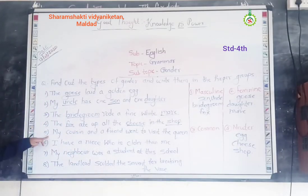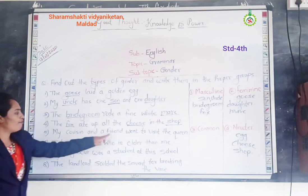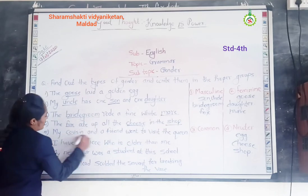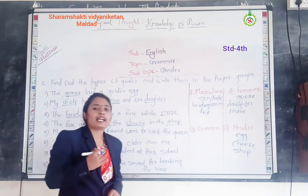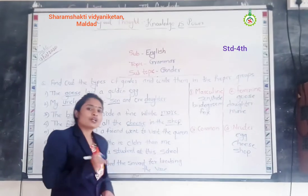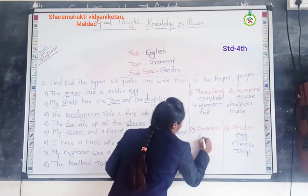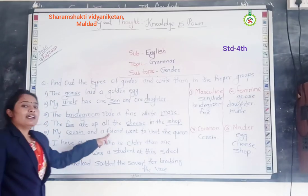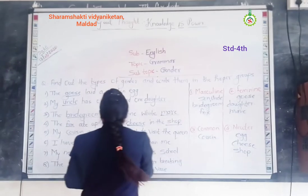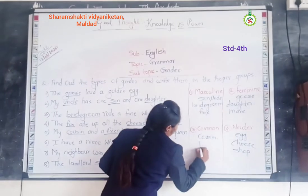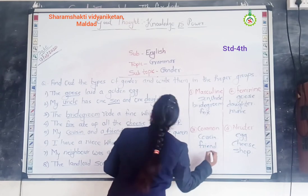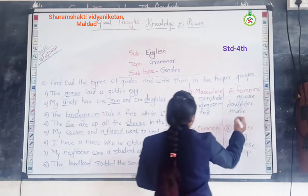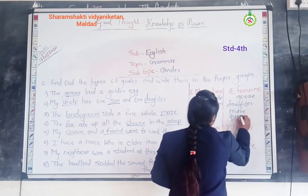Fifth sentence: My cousin and a friend went to deceive the queen. In this sentence, 'cousin' is a common gender — it is used for either male or female. 'Friend' is also a common gender. And 'queen' is a feminine gender.